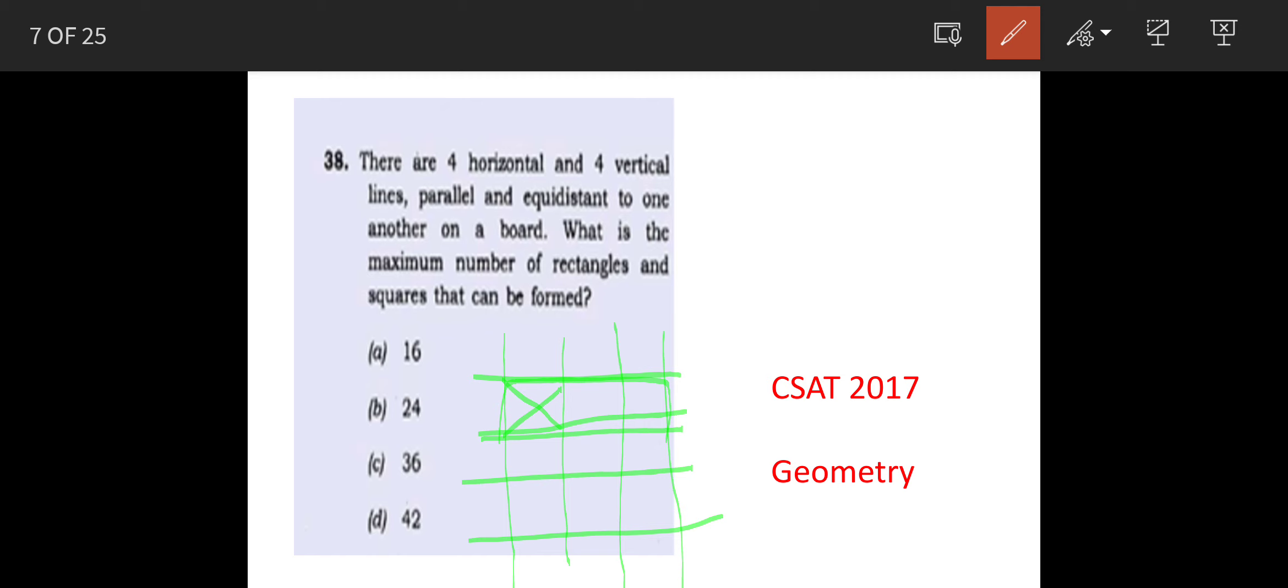So one method of doing this question is you count them physically, otherwise you can use formula of combinations nCr equals factorial n divided by factorial n minus r upon factorial r. Now this question is a very common question and you can use this formula. Sometimes they ask 4 and 3, sometimes they change the numbers but the question remains the same.